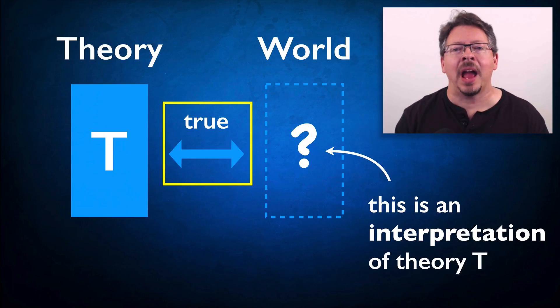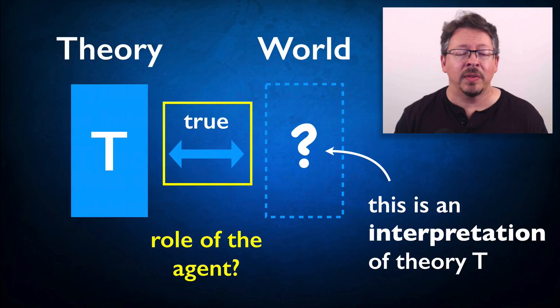But how do we pick out those assertions? And what kind of facts do they describe? And we've already seen a number of objections to this idea that theories interpret themselves. What's the role of the agent in all this? How does our use of a theory bear on how a theory represents the world?